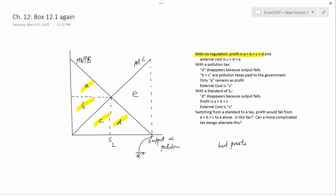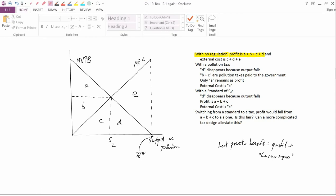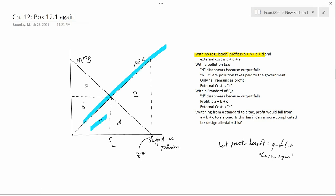I mentioned a long time ago that net private benefit is actually more than just profit. If you want to be technically correct, it's profit plus something called consumer surplus. But I usually do what the book does, which is to ignore the consumers who are buying the output. So the net private benefit is the same as profit. External cost under no regulation is the area under the MEC curve, so it's c plus d plus e.